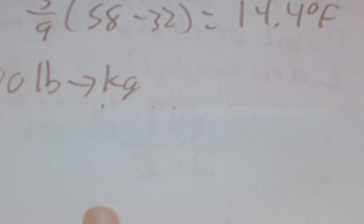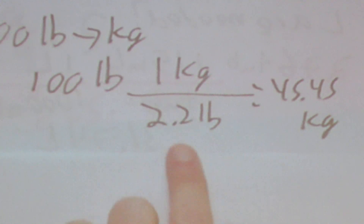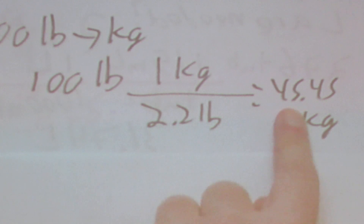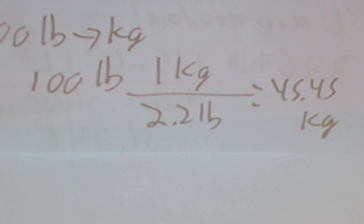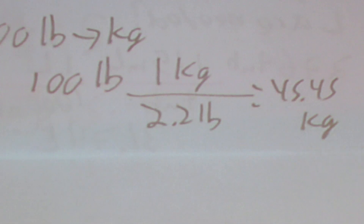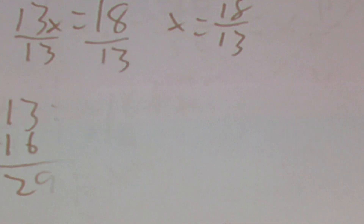Then let's say we have 100 pounds to convert into kilograms using 1 kilogram equals 2.2 pounds. So 100 pounds divided by 2.2 pounds gives 45.45 kilograms. This question is actually asking you to put in your own weight in pounds and convert it — but using 100 is fine. That's it for the conversions.